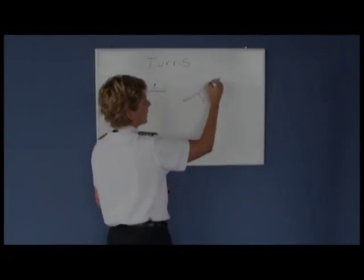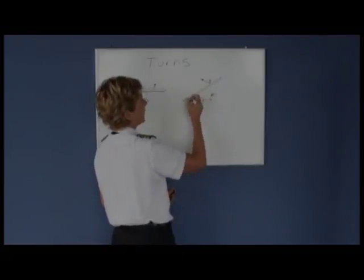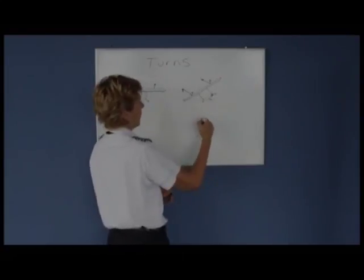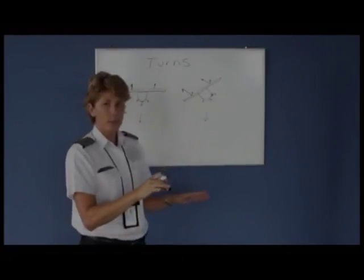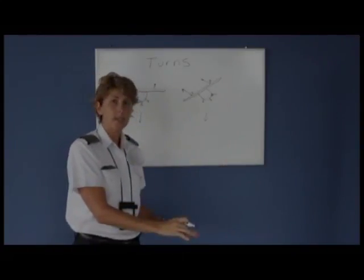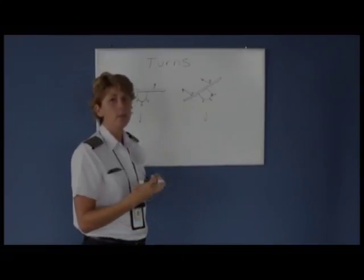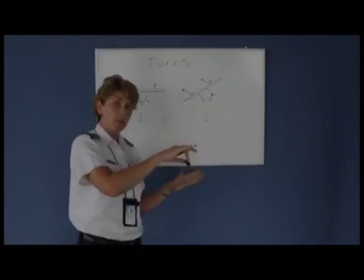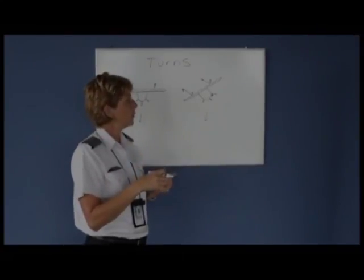When we bank the airplane, we start to lose our vertical lift and it becomes more horizontal, allowing us to turn. We still have the weight of the aircraft, so if we start to lose our vertical lift and it becomes horizontal, the airplane is going to start to descend. To counteract that, you have to increase back pressure on the yoke to maintain your altitude. The steeper you turn, the more back pressure is needed.